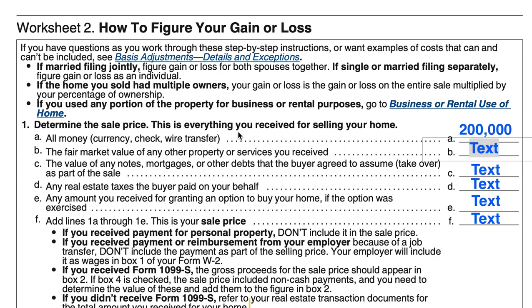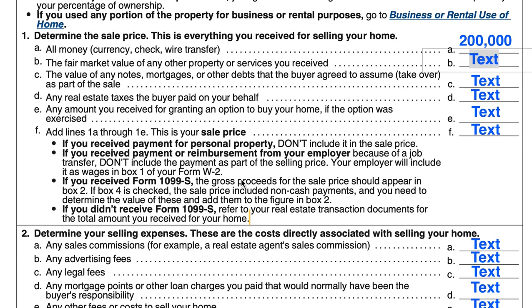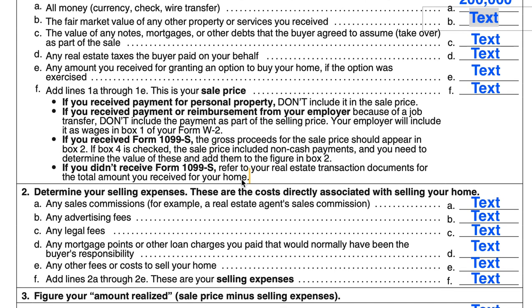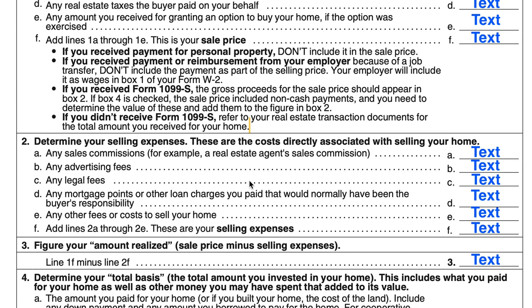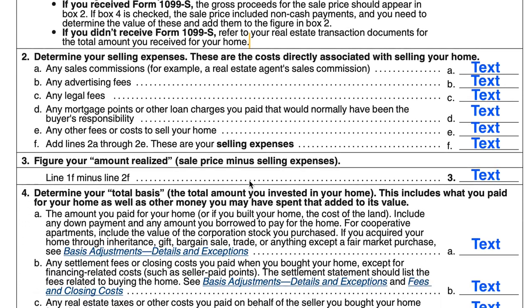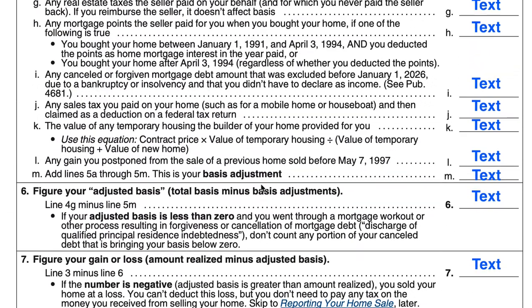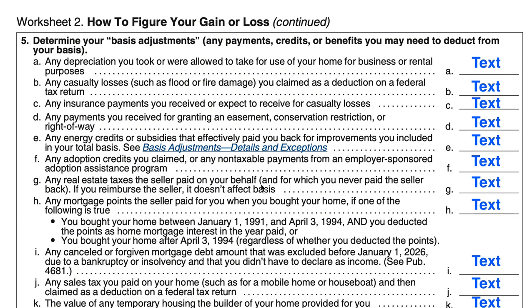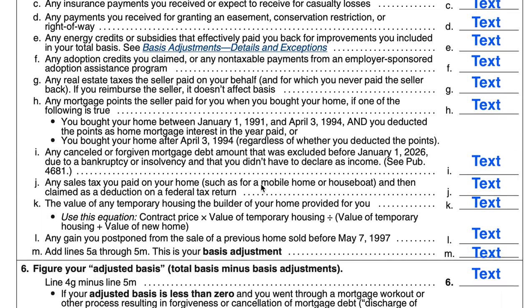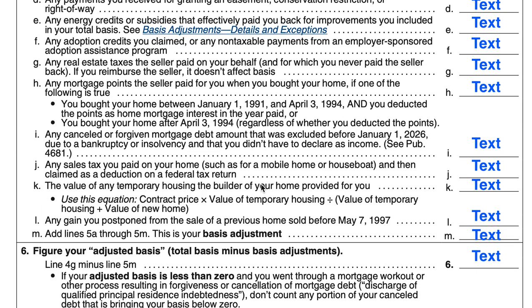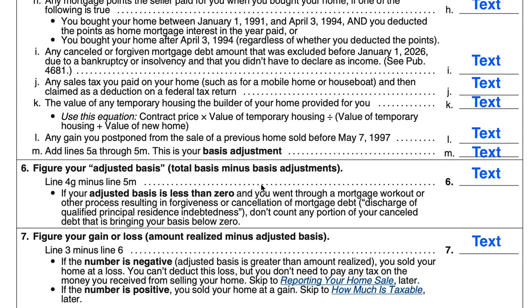In Part 1, we'll determine the sale price, which is everything that we receive for selling the home. In the next part, we'll determine the selling expenses, and from there we'll determine the amount that was realized. Then we'll go over the total basis that you might have invested in your home, determine basis adjustments, calculate your adjusted basis, and then calculate your gain or loss.